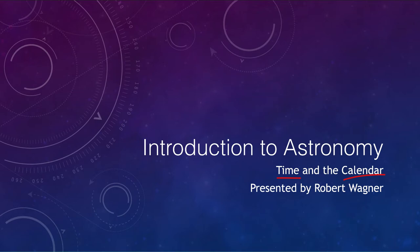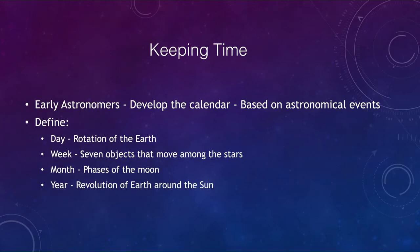There are a number of different ways of measuring time, and the early astronomers used these to develop the calendar. The calendar was all based on astronomical events. For example, our day is based on the rotation of the earth — how long it takes the earth to rotate once on its axis gives us our day.